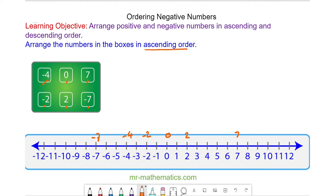in ascending order, we work our way from the furthest left, which is negative 7, negative 4, negative 2, 0, 2, and 7. So again, these are the numbers in ascending order.